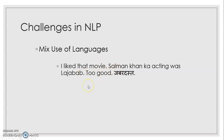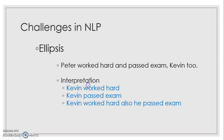Another challenge in natural language processing is ellipsis — meaning incomplete sentences. For example: 'Peter worked hard and passed the exam. Kevin too.' What should the interpretation be? Did Kevin also work hard? Did Kevin also pass the exam? Or did Kevin also work hard and then pass the exam? Understanding the meaning from an incomplete sentence is a challenge in NLP.